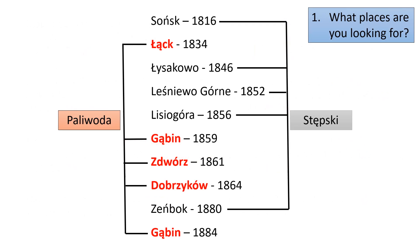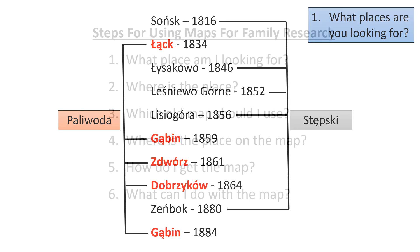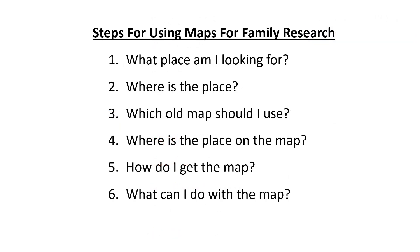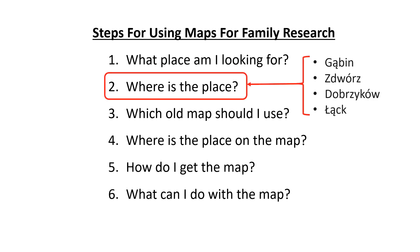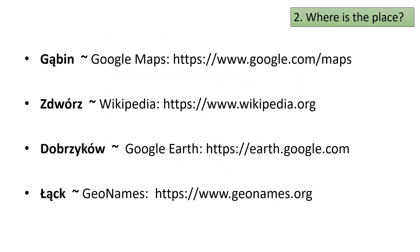We will start with the four places associated with the Polivoda family. Having identified the places we will be looking for, we can move on to the second step in the process: finding the location of these places. Here again are the four places we will be searching for, along with the place search engines we will be using to find each place.